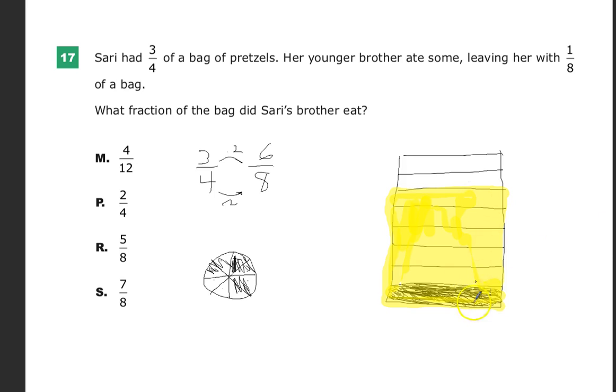But let's see how much he ate. So this is the total amount they started with. This is the final amount. So I'm just going to count one, two, three, four, five parts. So my answer to number 17 is five over eight. No big deal.